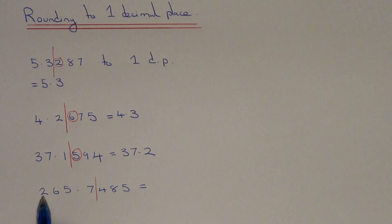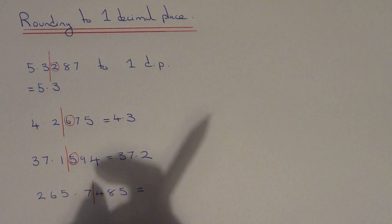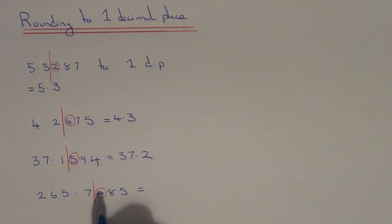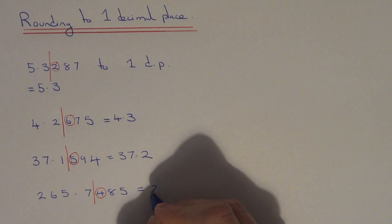Look at the next number after the line to see which one it's closer to. This time the number after the line is less than 5, so we round the number down. In other words, we keep it the same. It's closer to 265.7.